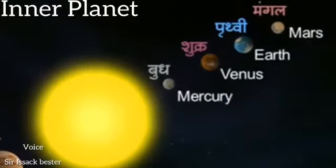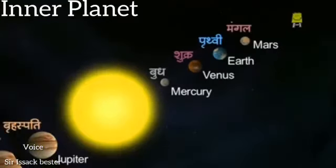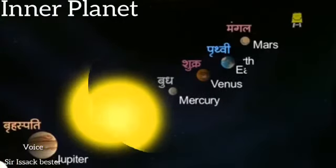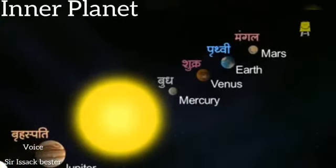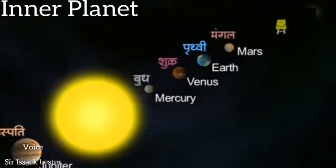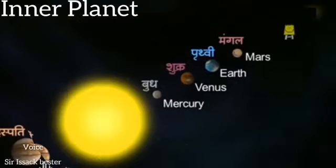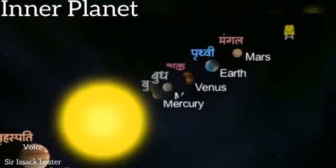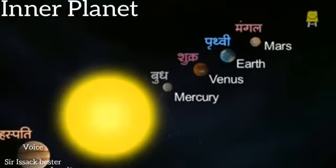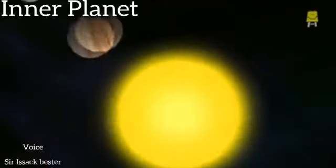What do you mean by inner planets? The inner planets are the planets that orbit around the sun between the sun and the asteroid belt — that is, are close to the sun. These are Mercury, Venus, Earth, and Mars.